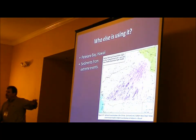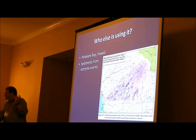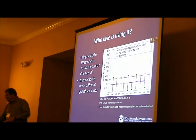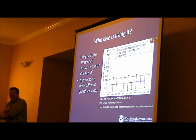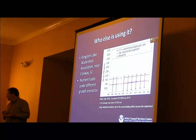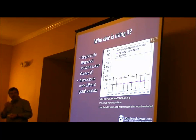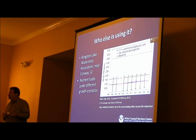The advantage here, even though it has caveats like any model, is that if you vary one thing, it's a quick and easy way to look at the relative impact. Another example: the Kingston Lake Watershed Association near Conway, outside Myrtle Beach, South Carolina, wanted to help guide sustainable development within their watershed. They ran a variety of growth scenarios with uncertainty bounds, looking at total nitrogen through different land cover changes over time to see when they'd be exceeding their TMDL numbers. It's not used to predict exact numbers, but to look at trends consistently — pretty clever.